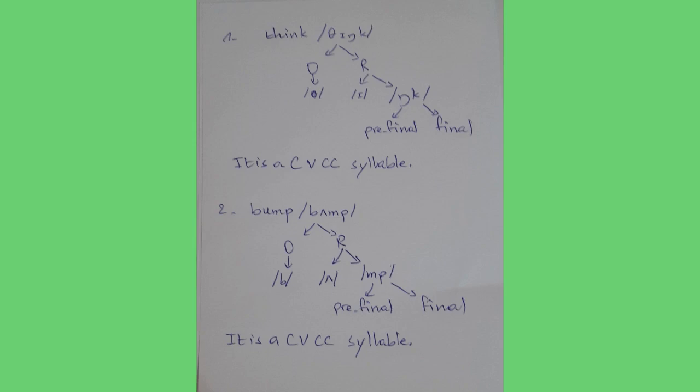Let's make the three representations. Number one: 'think'. In 'think', we have /th/ as the onset, and in the rhyme we have the vowel sound — the nucleus /ɪ/ — and two final consonants: pre-final /ŋ/ and final /k/. So it is a CVCC syllable.